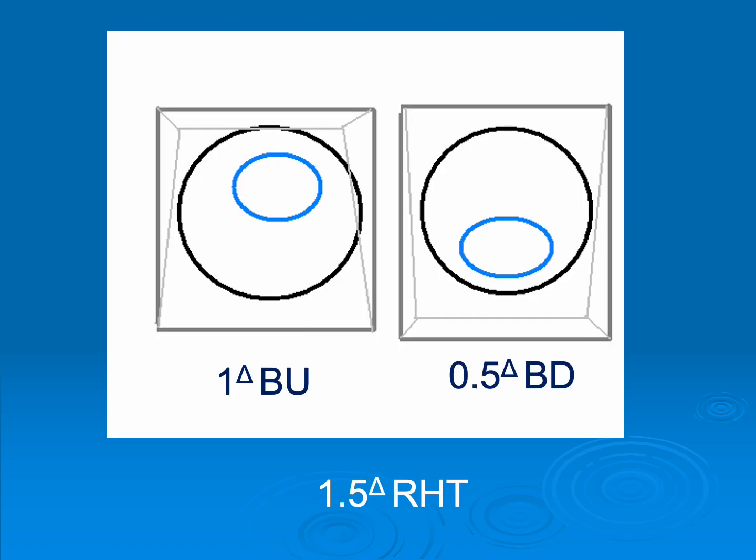Hopefully here is what you saw: when the prisms were oriented in opposite directions, you did see movement. And in this case, it's 1.5 right hyper. Why right hyper? Because the right eye went up higher than the left eye, because it's base up over the right eye, base down over the left. Strabismus is the distance between the positions of the eyes.